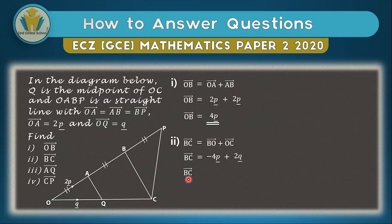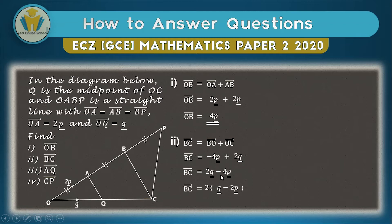After arranging, another important step is factorizing the answer. We put 2 outside the brackets. For the q term: 2 multiplied by 1 gives 2q, so we have q inside. For the p term: 2 multiplied by 2 gives 4, so we have minus 2p inside, giving minus 4p when expanded. Our final factorized answer for BC is 2(q − 2p).